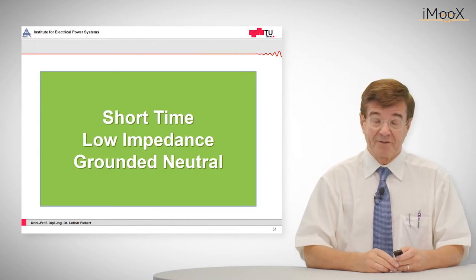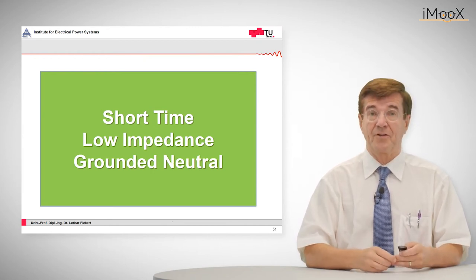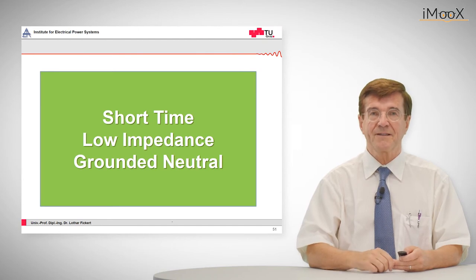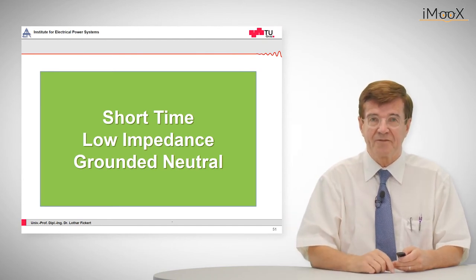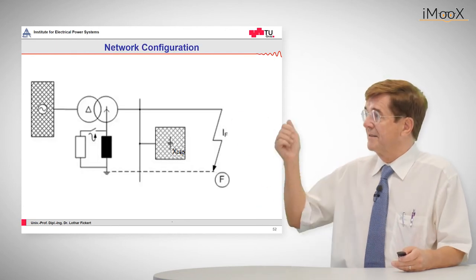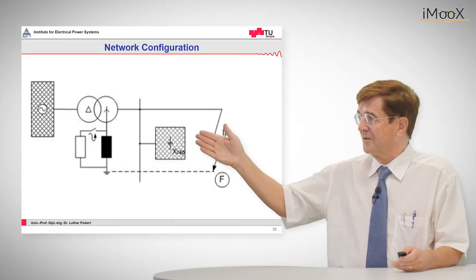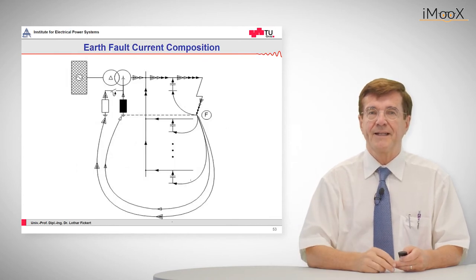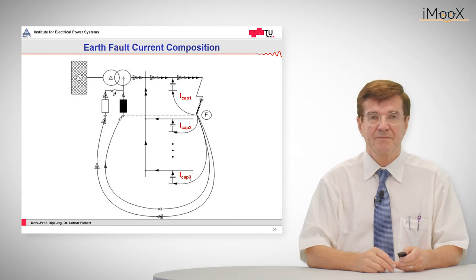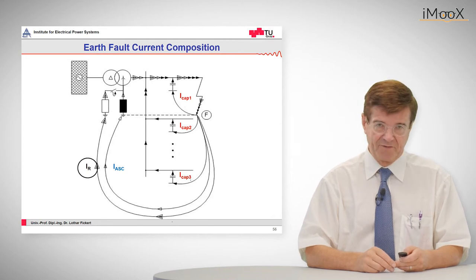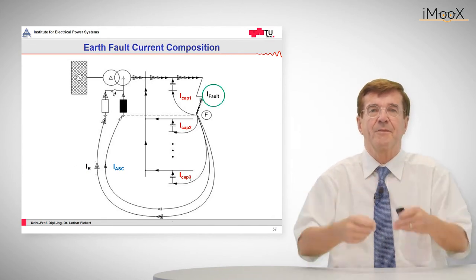The next scheme is the short time, low impedance grounded neutral. Sometimes it is desirable or necessary to add additional resistances into the neutral current path, thereby increasing the resistive proportion of that current in order to help protection find the fault. Note that at the far end of the network there is an additional resistor which is switched on and off. The components include capacitive, reactive, and an additional resistive component — all three making up the final fault current.